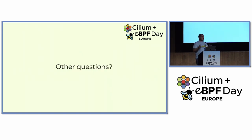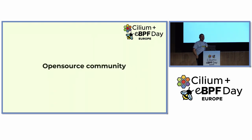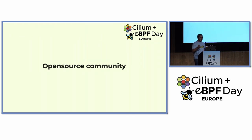But what if the tenants have other questions? Where should they go? The answer is very simple: Cilium is an open source CNI with a great community around it. So if you have any questions or issues, you can always ask the community on GitHub, on Slack, or at conferences.